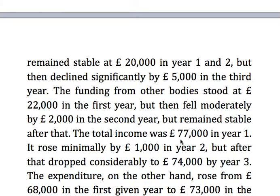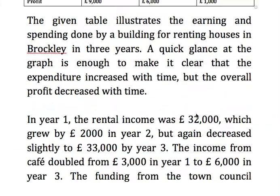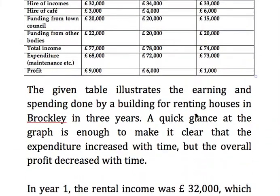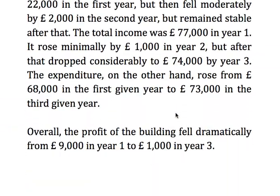The total income was £77,000 in year one, increased to £78,000 in year two, but then decreased to £74,000 by the third year. The expenditure, on the other hand, rose from £68,000 in the first year to £73,000 in the third year.